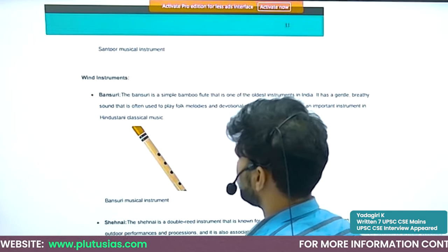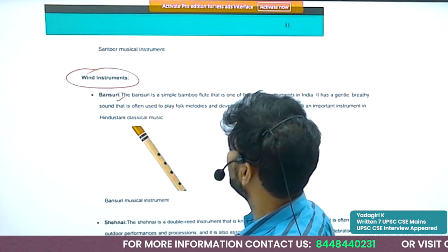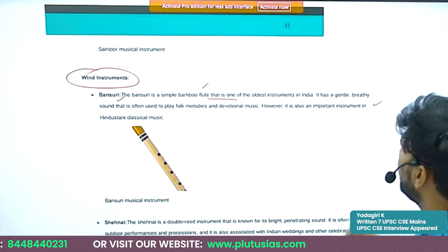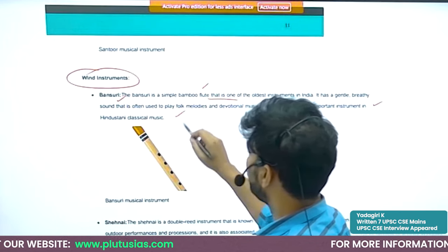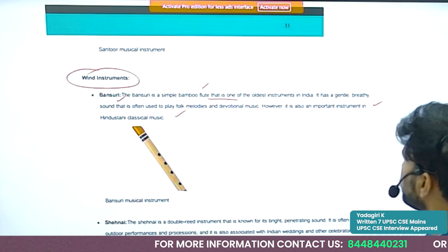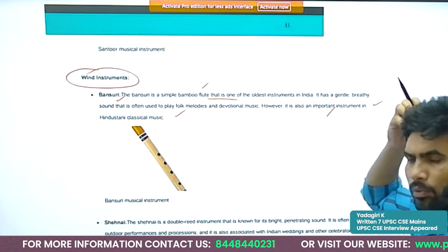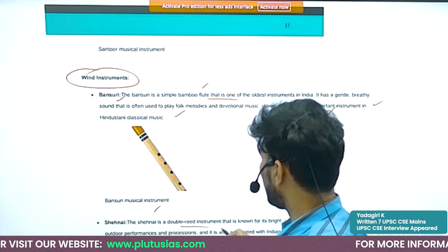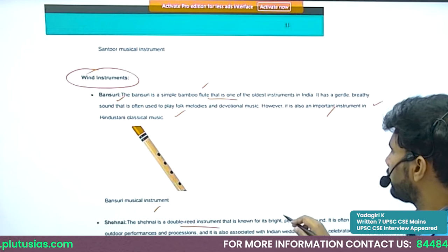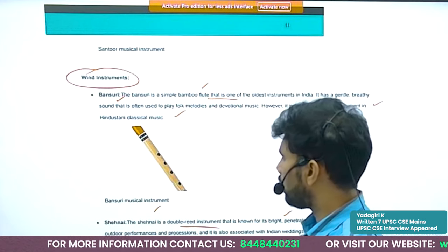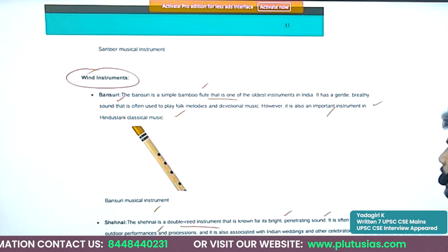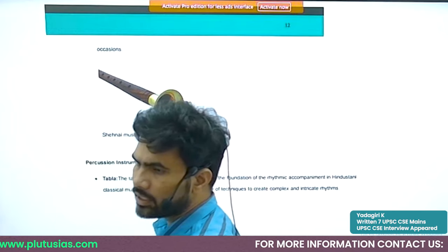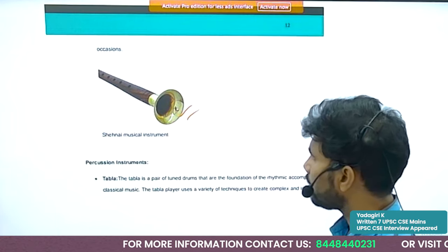Wind instruments include bansuri — a simple bamboo flute, one of the oldest instruments in India with a gentle, breathy sound used in folk melodies and devotional music, important for both Hindustani and Carnatic music. Shehnai is a double-reed instrument known for its bright, penetrating sound, often used in outdoor performances, processions, and associated with Indian weddings and celebrations.